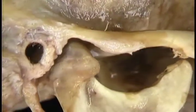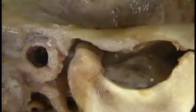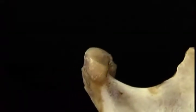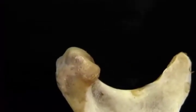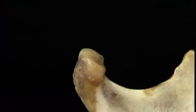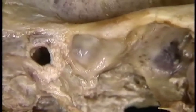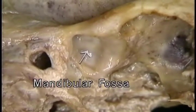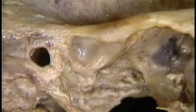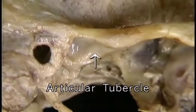Here's what the two joint surfaces look like in the living body. They're shaped quite differently. The articular surface of the condyle is curved sharply from front to back — it's almost pointed on the top. The articular surface of the temporal bone has a double curve. This concave part is the mandibular fossa. This convex part is formed by the downward bulge of the articular tubercle.